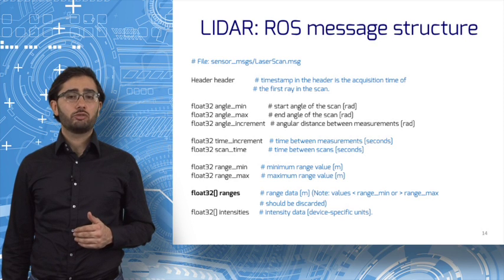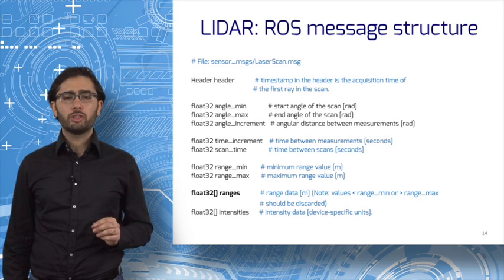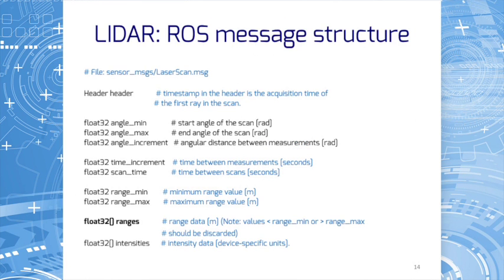The ROS message structure for LIDAR is pretty straightforward. In particular, ranges is the array of distances to the obstacles in the scenes. Element I of ranges is the distance to the object along step I. Recall that step I is the I plus first laser beam produced by the LIDAR, and there are 1080 steps for the 10LX LIDAR we are using.